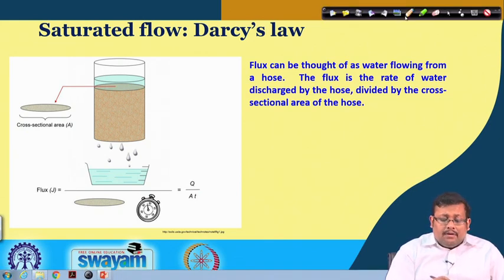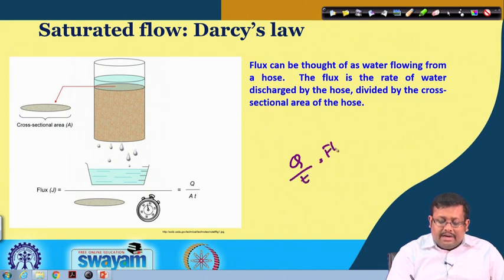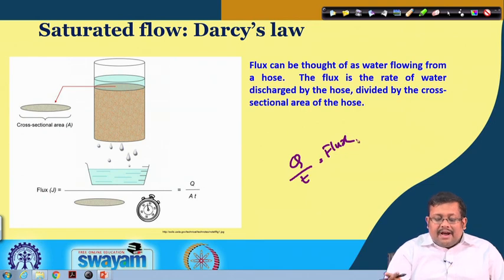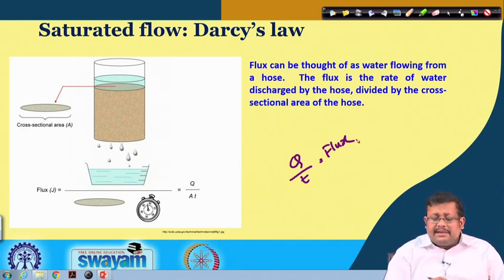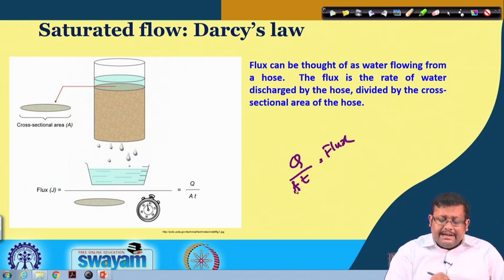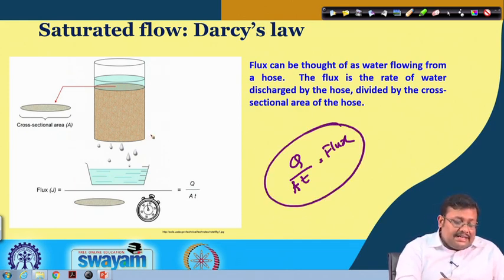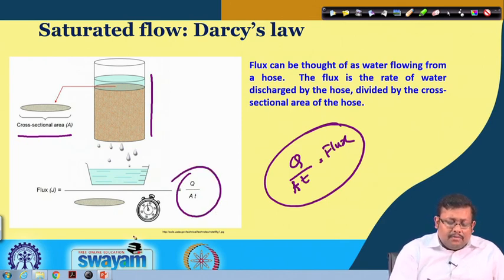In saturated water flow, the flux is Q/T. This can be thought of as water flowing from a hose — the flux is the rate at which water is discharged by the hose divided by the cross-sectional area of the hose. Flux is calculated as Q / (A × T).